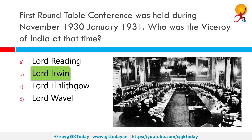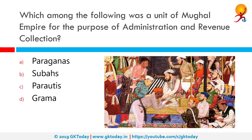The first Round Table Conference convened from 12th November 1930 to 19th January 1931. Which among the following was a unit of the Mughal Empire for the purpose of administration and revenue collection? The correct answer is Suba. A Suba was the term for a province in the Mughal Empire. The word is derived from Arabic and Persian. The governor or ruler of the Suba was known as the Subadar, which later became Subedar to refer to a ranking officer in an army.